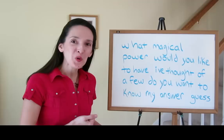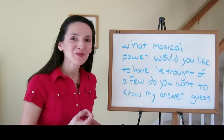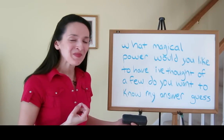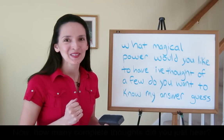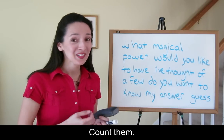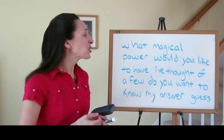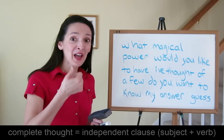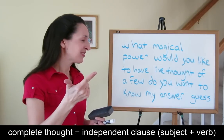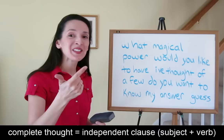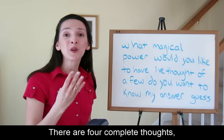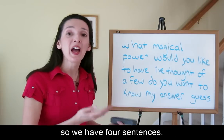What magical power would you like to have? I've thought of a few. Do you want to know my answer? Guess. Now, how many complete thoughts did you just hear? Count them: 'What magical power would you like to have?' 'I've thought of a few.' 'Do you want to know my answer?' 'Guess.' There are four complete thoughts, so we have four sentences.